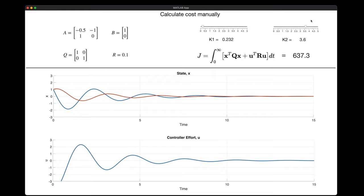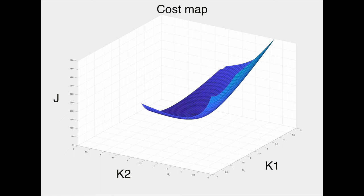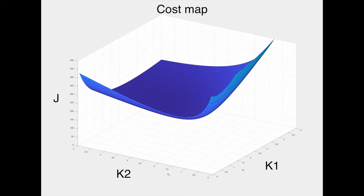And to visualize what this looks like, I'm going to programmatically sweep K1 and K2 between 0 and 5, and then plot the resulting cost on the vertical axis. And this produces this convex surface. You know, it sort of looks like a blanket with the ends held up, creating a low point somewhere in the middle.